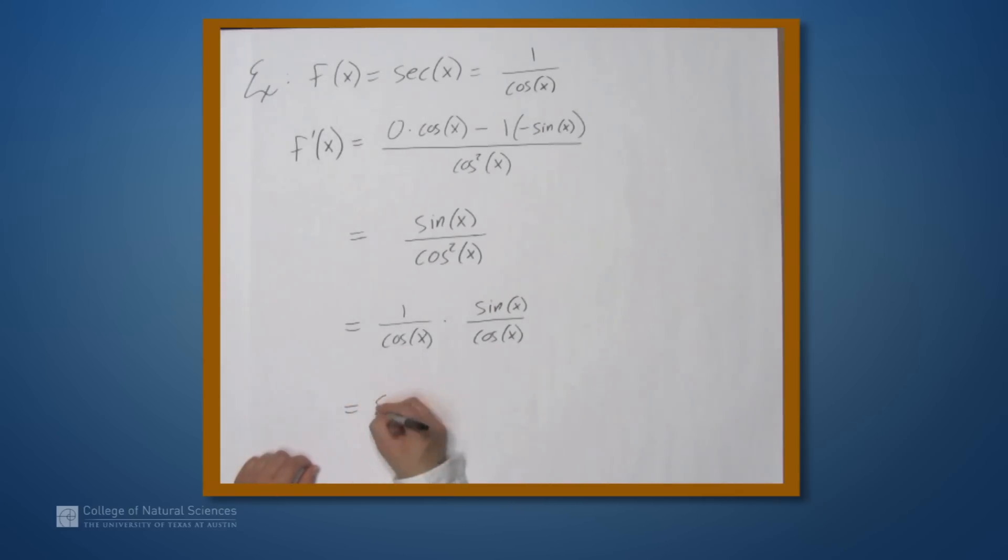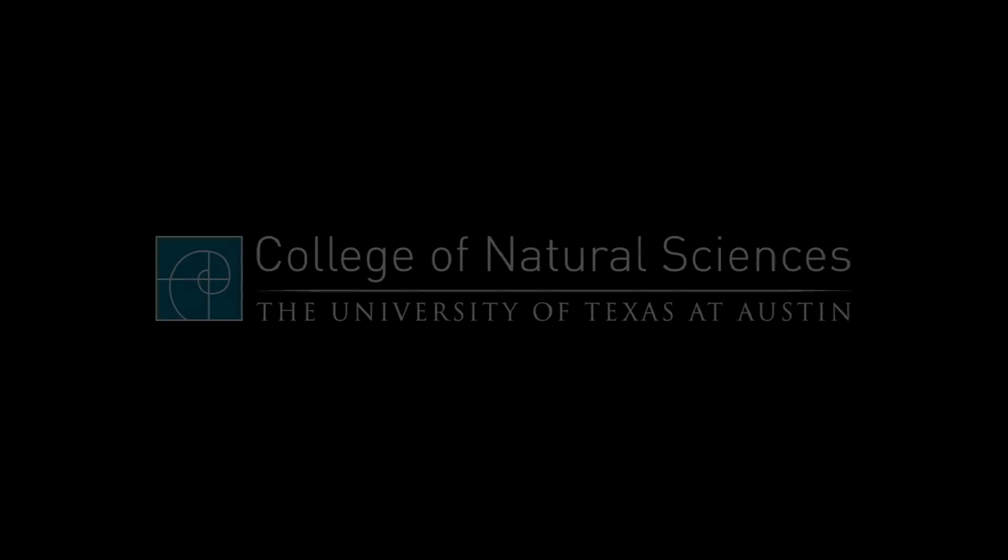So 1 over cosine is secant of x, and sine over cosine is tangent of x. And this is the formula that you'll usually see for the derivative of secant.